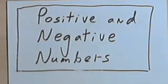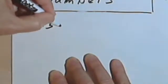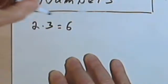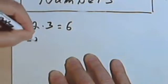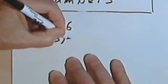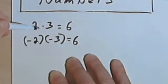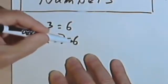Let's look at multiplication and division first. When you multiply two positive numbers, like 2 times 3, you're going to get a positive answer. If you multiply two negative numbers, like negative 2 times negative 3, you'll also get a positive answer. So the basic rule is: if the signs are the same, you get a positive answer.